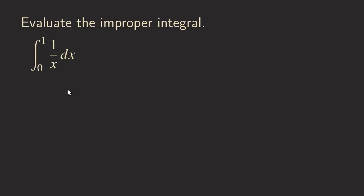Hello everyone, it's Wilson here. Today I want to talk about three improper integrals that have an integrand that is not continuous. As you can see here, this integrand 1 over x is not continuous at zero. So to evaluate this improper integral and determine whether it's convergent or divergent, we are going to first use the definition and rewrite it as a limit of a definite integral.